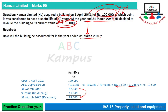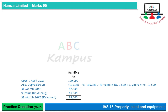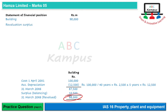Ab yeh to humne sirf gain ki amount calculate kar li. Humein poori accounting ko kaise handle karna chahiye, uske baare mein hum discussion karenge. To statement of financial position mein humara asset kitne ka show hoga? Humara asset show hoga 98,000 ka. Humara revaluation surplus kitne ka show hoga? To wo show hoga 10,500 ka.